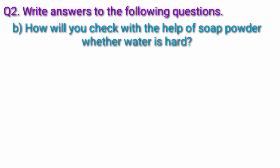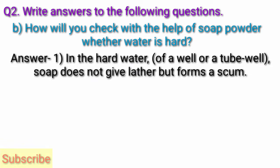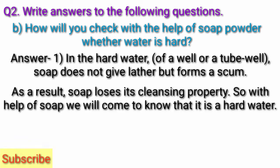Question B: How will you check with the help of soap powder whether water is hard? Answer: In the hard water of a well or a tube well, soap does not give lather but forms a scum. As a result, soap loses its cleansing property. So with the help of soap, we will come to know that it is hard water.